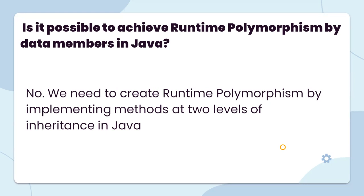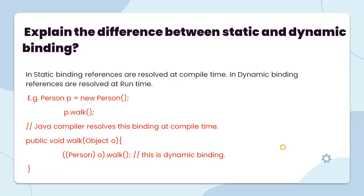Is it possible to achieve runtime polymorphism by data members in Java? No. We need to achieve runtime polymorphism by implementing method overriding in Java, not by data members. Now, explain the difference between static and dynamic binding. In static binding, references are resolved at compile time. In dynamic binding, references are resolved at runtime.